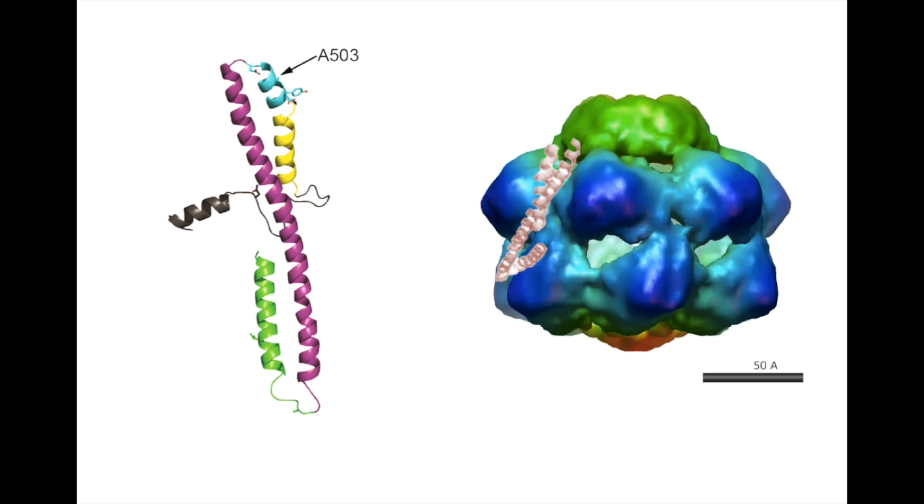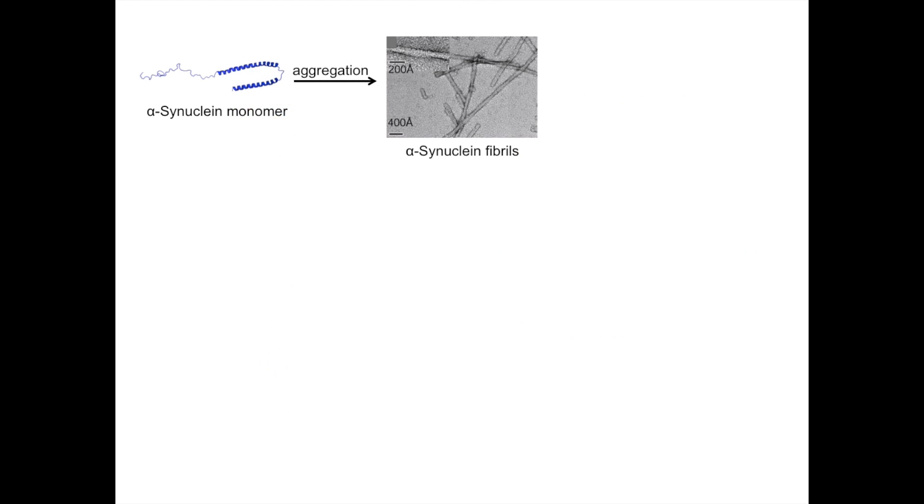Interestingly, this amino acid is located in the middle domain, a coiled-coil domain distinctive to HSP-104. Further studies compared the aggregation of alpha-synuclein fibrils incubated with wild-type HSP-104 with those incubated with the HSP-104-A503V mutant.